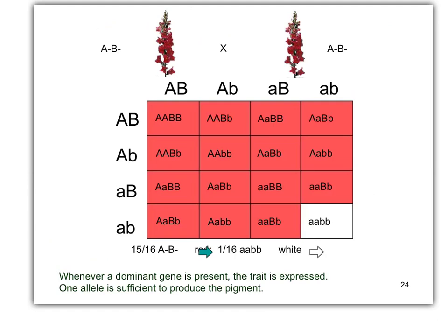Here's our Punnett square. Genotypes don't change — you can look at that just like anything else. In this case, anytime any gene is dominant — if either gene has at least one allele dominant — it looks red. The only time you see the white phenotype or the second phenotype is when you have the double recessive. So it's a duplicate gene. Either A or B allows it to look red. If there's one big B, you get red. If there's one big A, you get red.